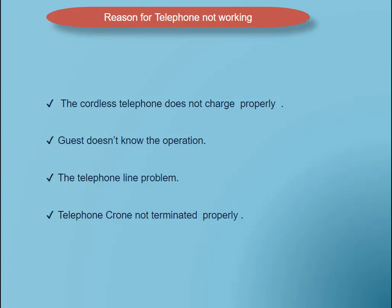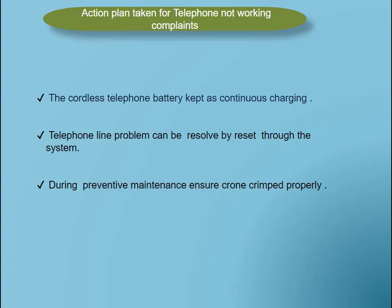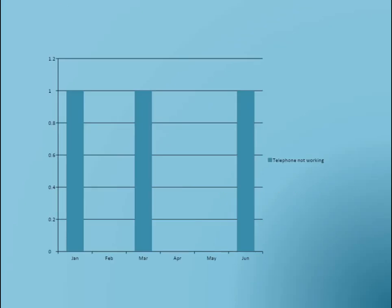Reasons for telephone not working: the cordless telephone does not charge properly, the guest doesn't know the operation, there is a telephone line problem, or the telephone crown is not terminated properly. Action plan: keep the cordless telephone battery on continuous charging; telephone line problems can be resolved by resetting through the system; and during preventive maintenance, ensure the ground is crimped properly. Since the complaint volume was very minimum, there were not many changes in the results.